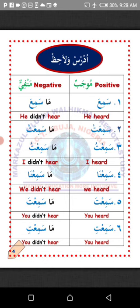Number three: Semi'itu — I heard. Ma semi'itu — I didn't hear. Number four: Semi'na — we heard. Ma semi'na — we didn't hear. Number five: Sami'ta — you heard. Ma sami'ta — you didn't hear. Number six: Sami'ti — talking to a single female person — you heard. Ma sami'ti — you didn't hear. I hope you understand. Just like: Zahabtu — I went, Ma zahabtu — I didn't go. Qara'tu — I read, Ma qara'tu — I didn't read.